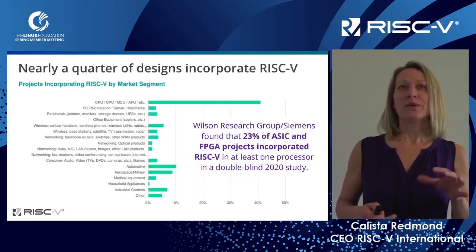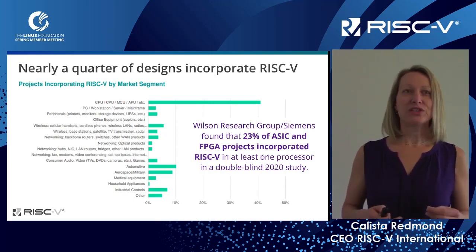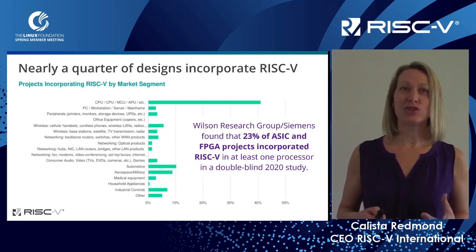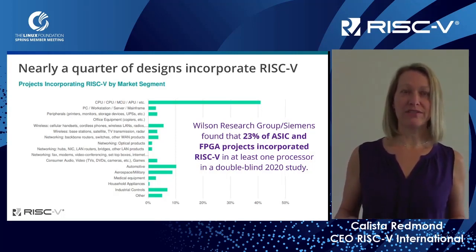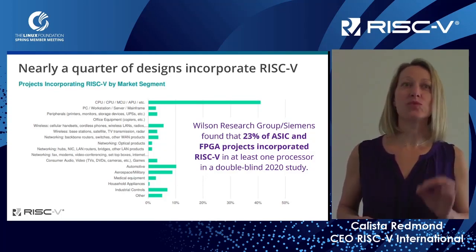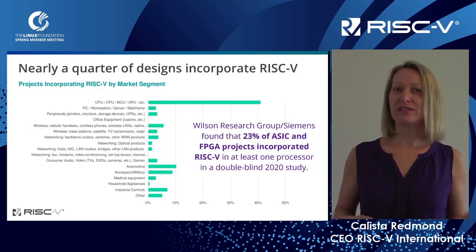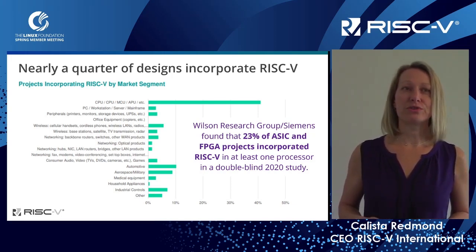Where are we today? Wilson Research Group took a look at what the designs were that were coming through today, and 23% — nearly a quarter — of ASICs and FPGA projects are incorporating RISC-V in at least one processor. This is a result of a study put out just last year. We are well on target to continue this growth trajectory.